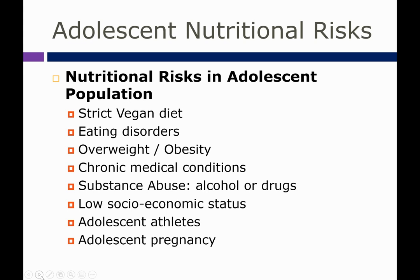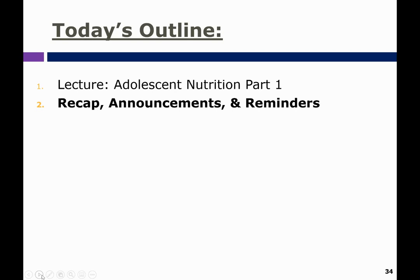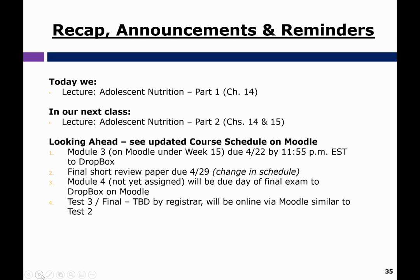Other nutritional risks in adolescent populations include strict vegan diets, eating disorders, overweight and obesity, chronic medical conditions, substance abuse, and low socioeconomic status — which is a risk factor for diet inadequacies and food insecurity. Adolescent athletes also face nutritional risks. And if pregnancy occurs during adolescence, when an adolescent is still growing and hasn't hit their growth spurt yet, there is considerable nutritional demand to support both the teenager's growth and the developing infant.